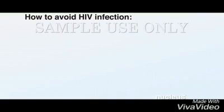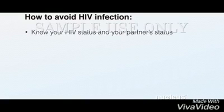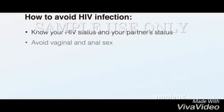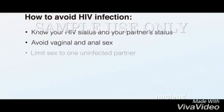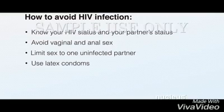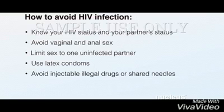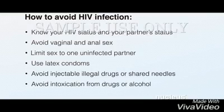To avoid getting or spreading an HIV infection, know your HIV status and your partner's status by getting tested regularly. The most effective way to prevent HIV infection is to avoid vaginal and anal sex. When engaging in sexual activity, you will be less likely to contract HIV if you only have sex with one uninfected partner or use latex condoms for protection. Avoid using injectable illegal drugs or sharing drug needles, because the needles may have the virus on them. Avoid intoxication from drugs or alcohol, because you will be more likely to engage in unsafe sexual behavior.